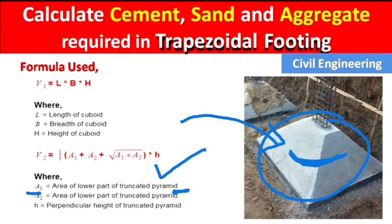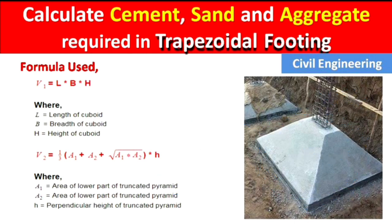This part is known as the truncated pyramid and the column sits on top of it. A1 is the lower area of the truncated pyramid, A2 is the upper area, and H is the perpendicular height of the truncated pyramid.